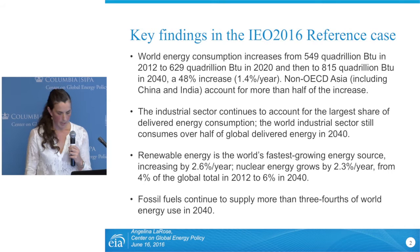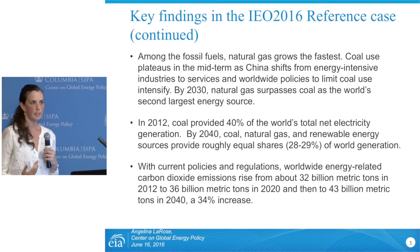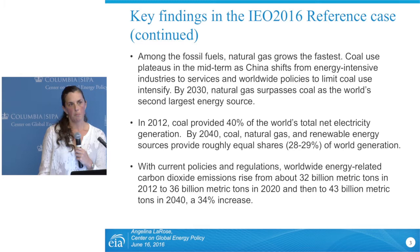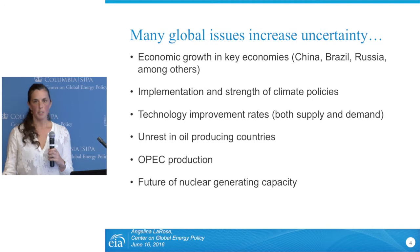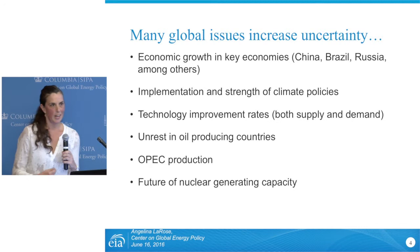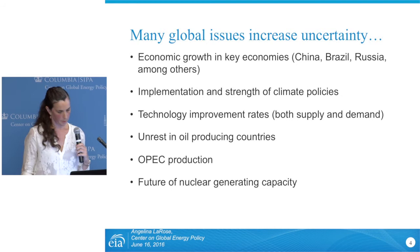We also have uncertainties related to the near term. In particular, we have uncertainty around how U.S. tight oil production may react to the current low oil price environment. Although we are seeing declining rig counts and less capital being invested within tight oil production in the United States, we're not really seeing a steep decline just yet. But over the long term, even though we're expecting oil prices to rebound in the next decade, what will the impact be?